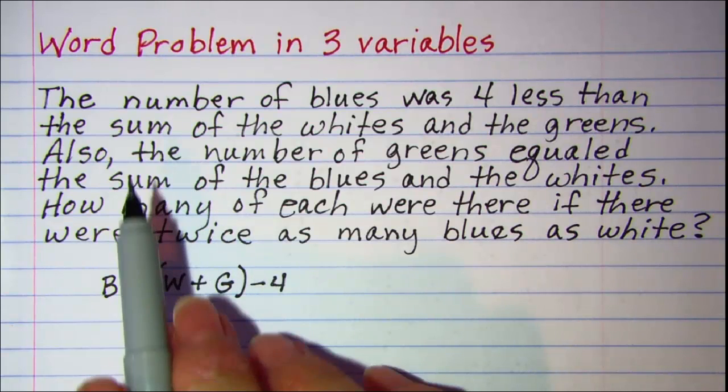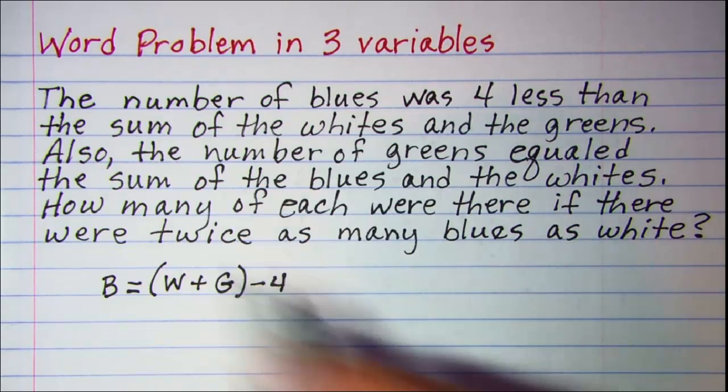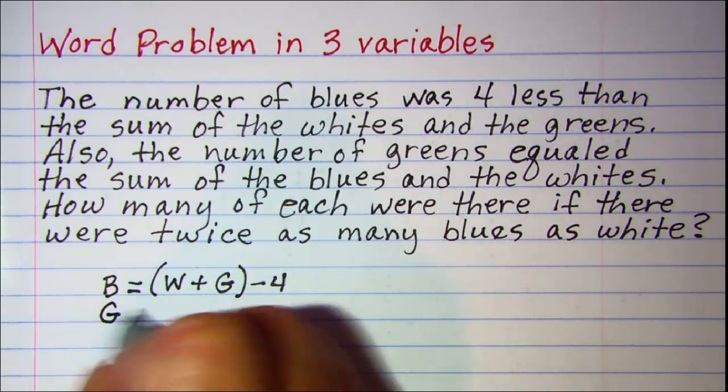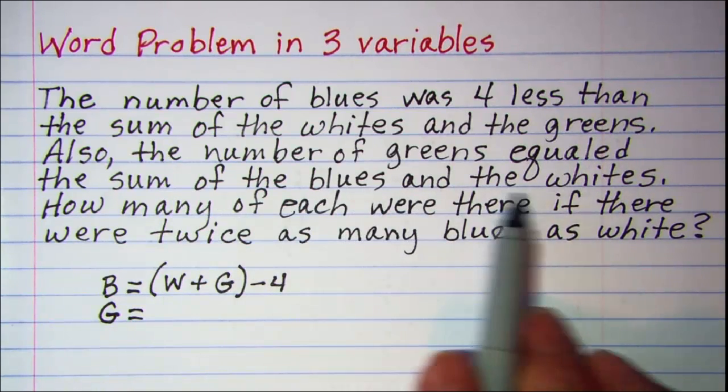The second sentence, also, the number of greens equaled, so G equaled, the sum of the blues and the whites.